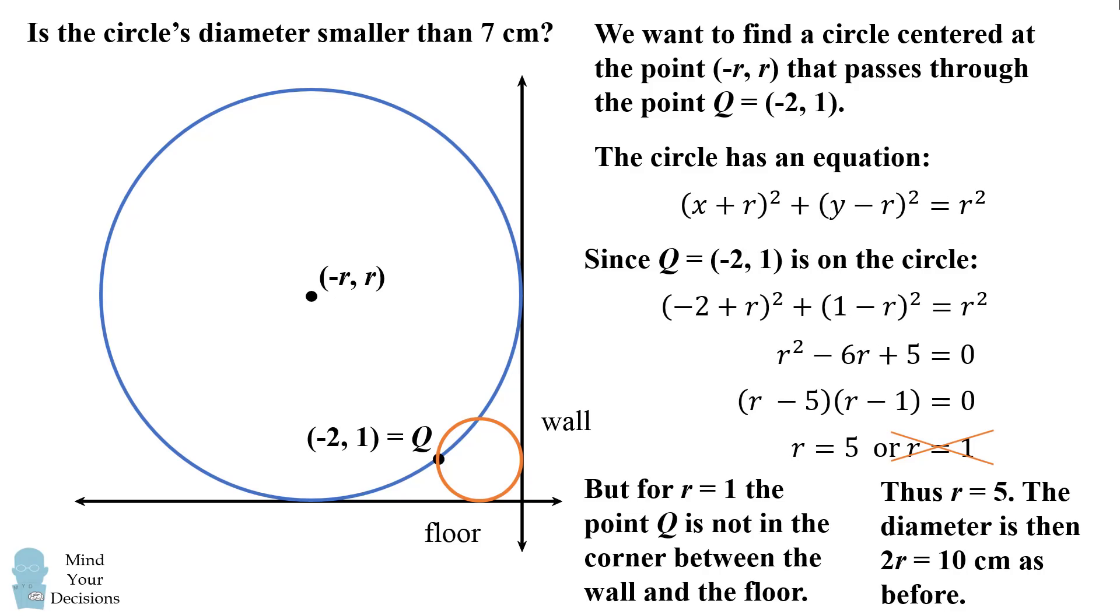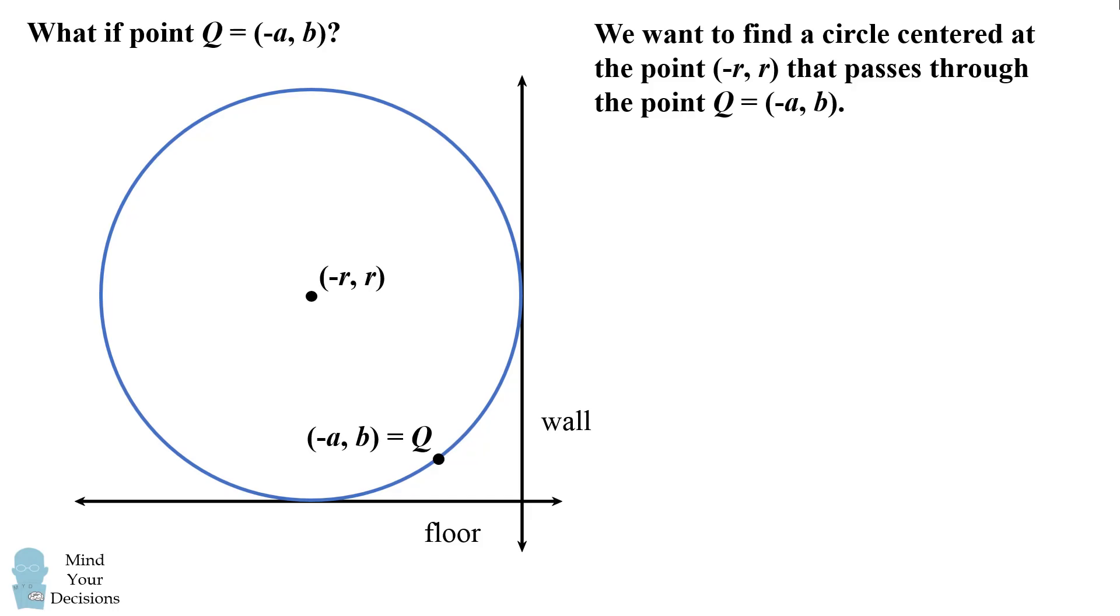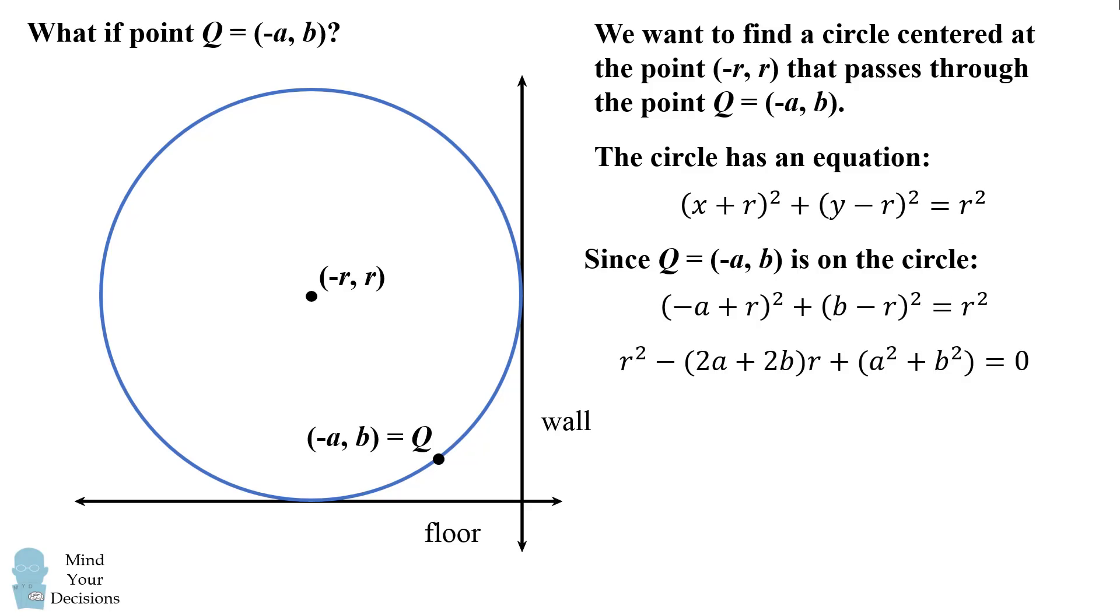So once again we figured out the circle's diameter is larger than 7 centimeters. But we figured out an exact value. And we can take this method and generalize it to solve for any value of q, where q is equal to (-a, b). We use the same general equation for a circle that's centered at (-r, r) and has a radius of r. We then need this circle to pass through the point q = (-a, b). So we substitute x = -a and y = b. And we end up with the following equation. Once again, we can expand each term and then collect like terms. We end up with the following quadratic equation. And we can then use the quadratic formula to get that the answers would be r = a + b ± √(2ab). We would then check if either solution satisfies the original constraints of the problem. And that would give us the value for r.